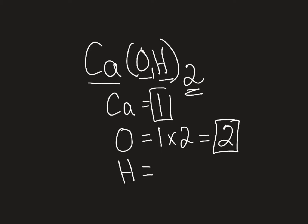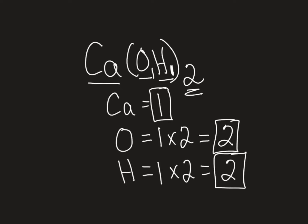I like to box or circle my answers so it's clear what the answer is. The next atom in this formula is hydrogen. Hydrogen has an understood one here, so we take that one and multiply it by the two on the outside, and that gives us two hydrogens. So in calcium hydroxide, we have one calcium, two oxygens, and two hydrogens.